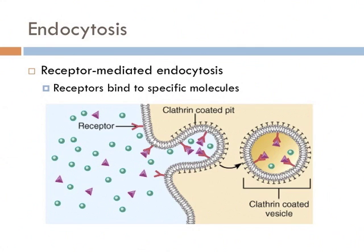Another type of endocytosis is receptor-mediated endocytosis. The cell membrane is embedded with proteins, and some of these proteins form receptors. These receptors are like outfielders catching baseballs — they snatch molecules up. When those receptors fill, they cause a chemical reaction which causes the cell membrane to pinch in and eventually form a vesicle that floats around inside the cell. The advantage over pinocytosis is that specific chemicals are selected — hand-picked — to go into the cell, whereas with pinocytosis, any solute present will make its way in.